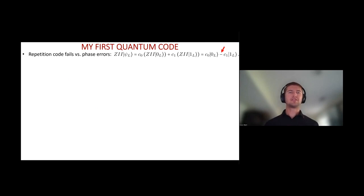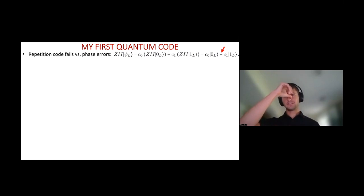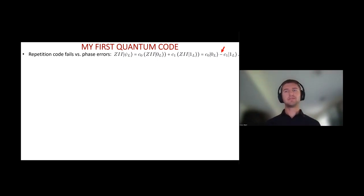The repetition code, however, is not useful in the quantum world because it fails against another error that's new to the quantum world — namely, because we're storing superpositions, we have to worry about the relative phase of the logical state. A single phase flip or phase error — Z on the first qubit — will induce a minus sign within the code space, so it won't take you out of the code space, it's not detectable, and it acts non-trivially by inducing this minus sign and corrupting our state.